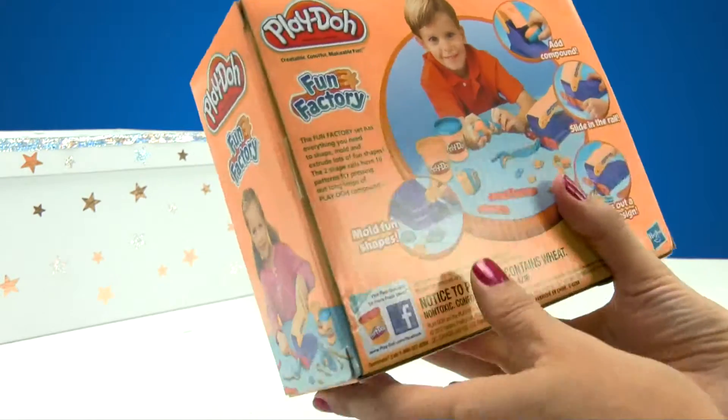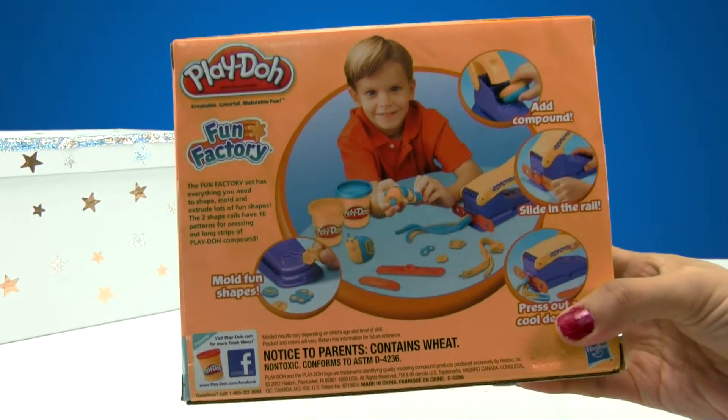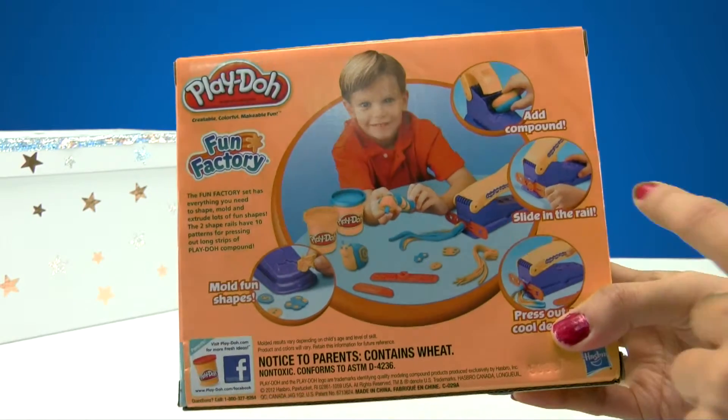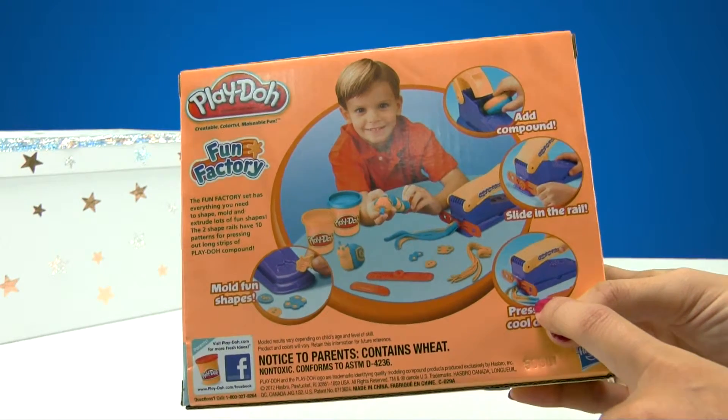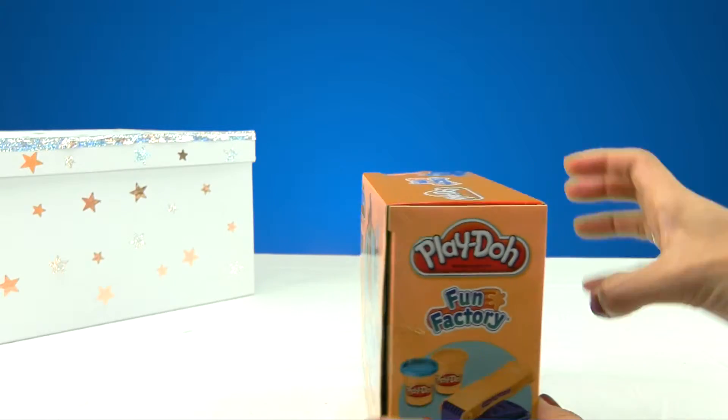You can see how this girl is playing with the machine that looks like a stapler. And this boy? What's he making? A worm? And here it explains how you use it. It looks really fun. You know what? I think I'm going to open the box. I can't wait any longer.